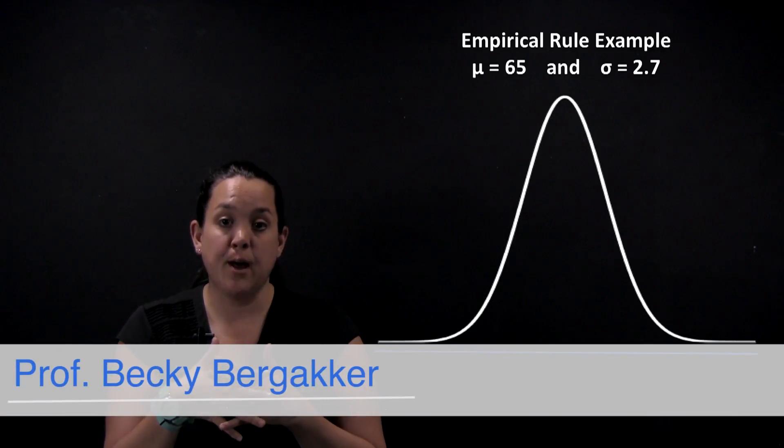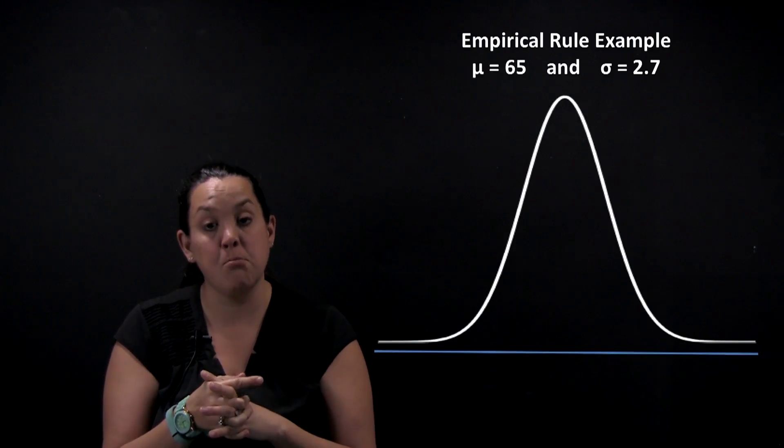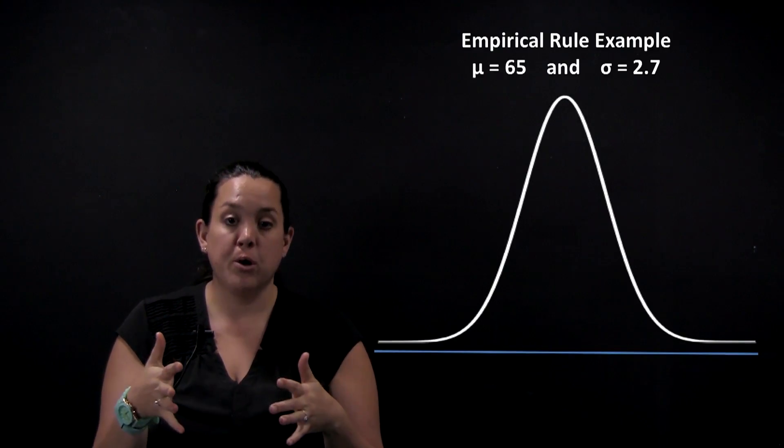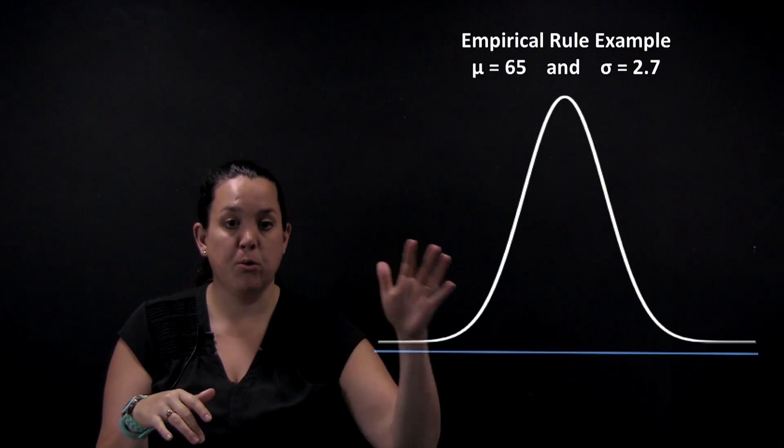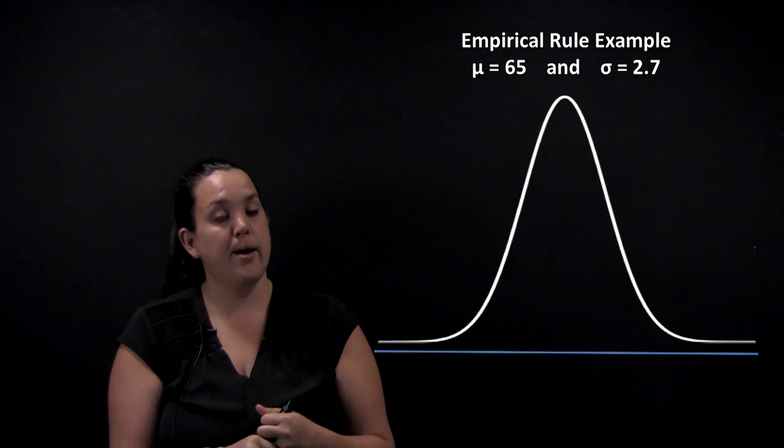So today we're continuing our discussion on the analysis of one quantitative variable. Specifically, we're looking at the empirical rule and we're going to work through an example so I can show you what it would look like on the curve and also how to do the calculations.